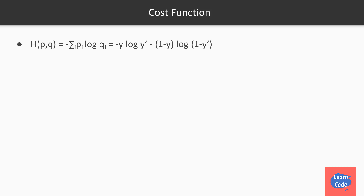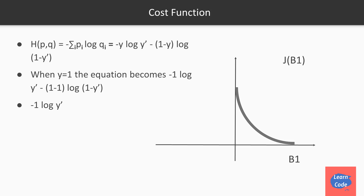The cost function is different from the linear regression cost function, because the cost function for logistic regression is not a convex function. So to get a convex function, we use a special cost function. When y equals 1, the equation becomes −log(ŷ), giving a cost of 0 when the predicted output is 1, and a very high cost when the predicted output is 0. When y equals 0, the equation becomes −log(1 − ŷ), so if the predicted value is also 0 the cost is low, and otherwise it becomes really high.